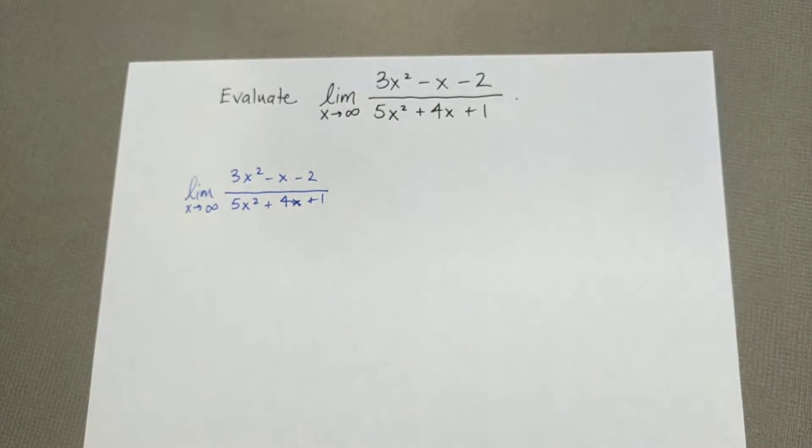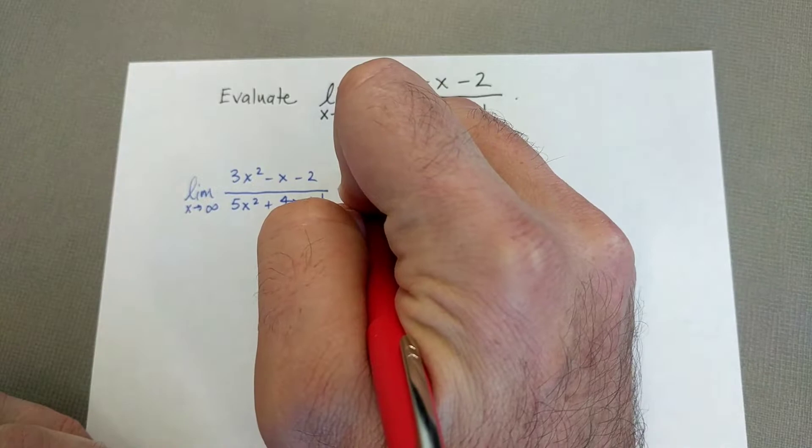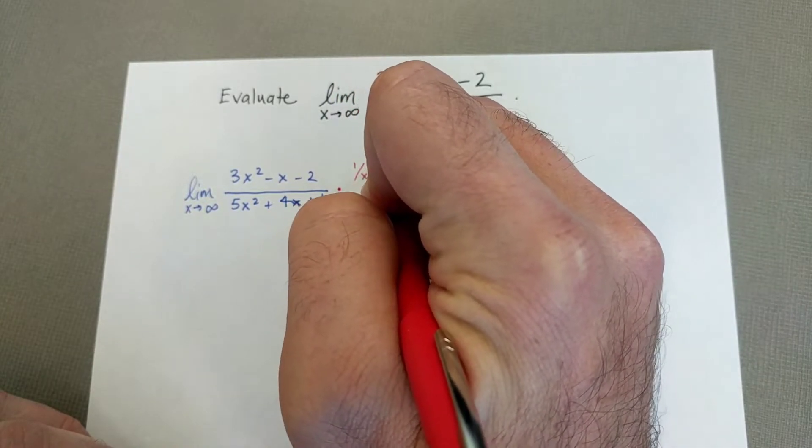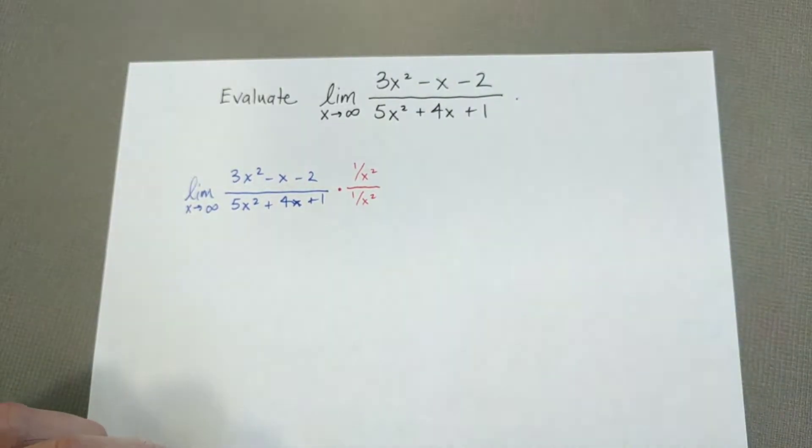Okay, so we have the original limit there. So what we're going to do is we're going to compare each of the terms to the fastest growing power of x. So in other words, what I'm going to do is multiply the numerator by 1 over x squared and the denominator by 1 over x squared. So I'm just multiplying by a fancy looking one. Same thing. Something divided by itself is always one.